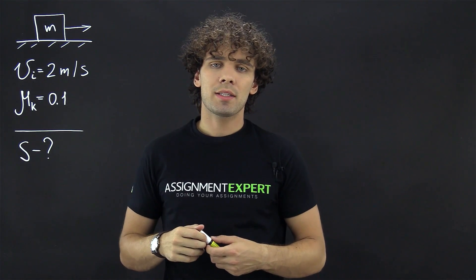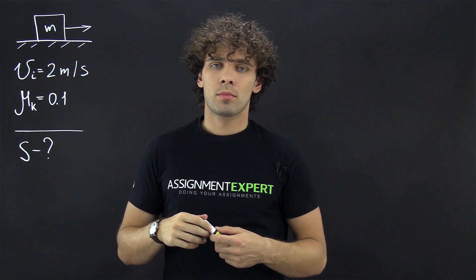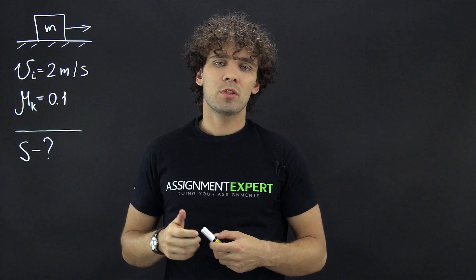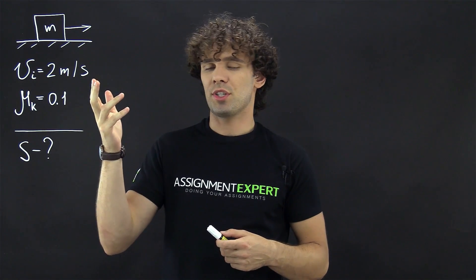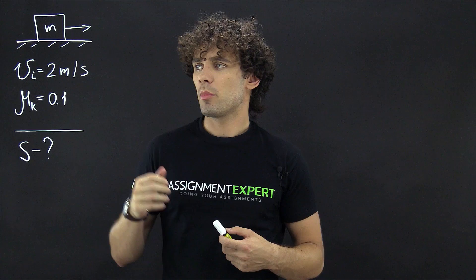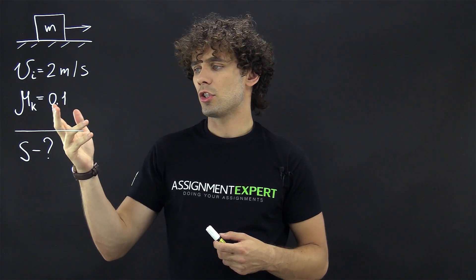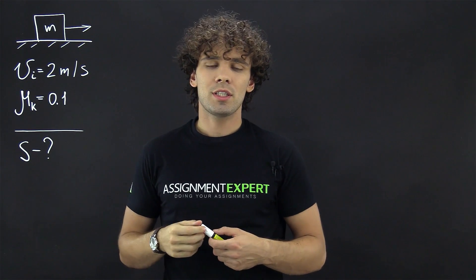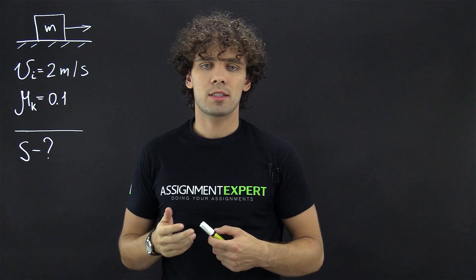We have a box of a certain mass that is on a rough surface. The box is pushed and moves with initial speed 2 meters per second horizontally. The coefficient of kinetic friction between the box and the surface is 0.1. What distance will this box travel until it stops?